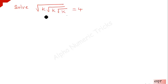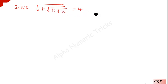Guys, now we are going to solve this nice radical problem. Square root of k under square root of k under root k is equal to 4. We have to find out the value of k.